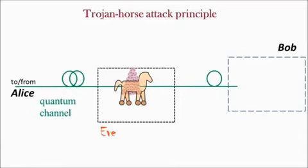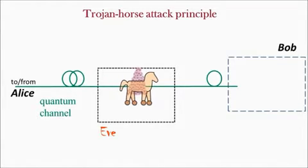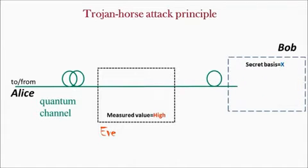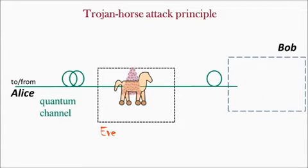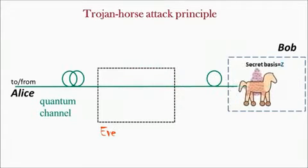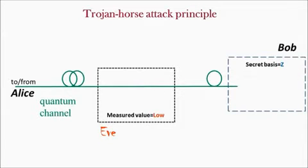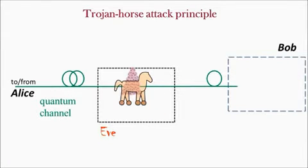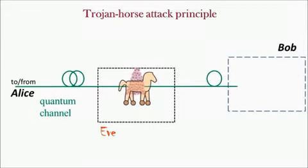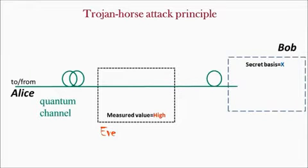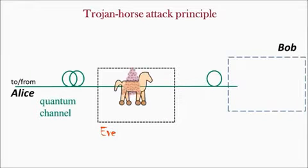The basic principle of Trojan horse attacks involves the adversary, Eve, sending in bright light from the quantum channel and analyzing the back reflections. By measuring the back-reflected photons, Eve can discern the secret basis choice of the attacked subsystem.